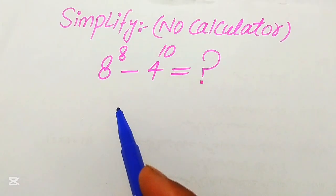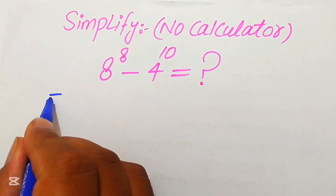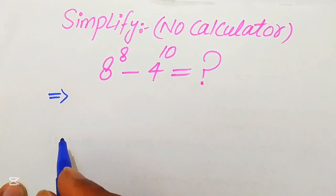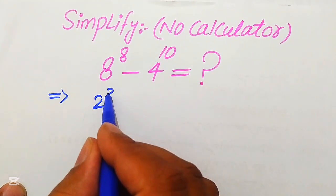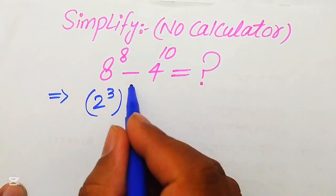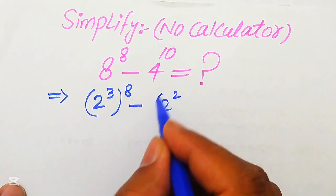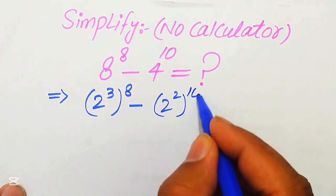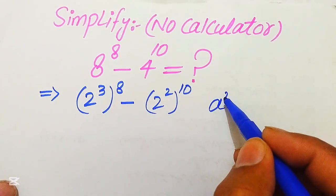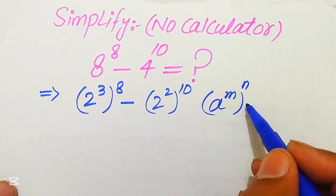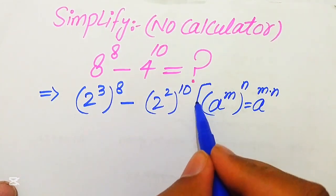We will show all of the working here. The very first step is to rewrite this expression: our base 8 is written as 2 cubed with whole power 8, and base 4 is written as 2 squared with whole power 10. Now we apply the exponent law: a to the power of m, to the power of n, equals a to the power of m multiplied by n.